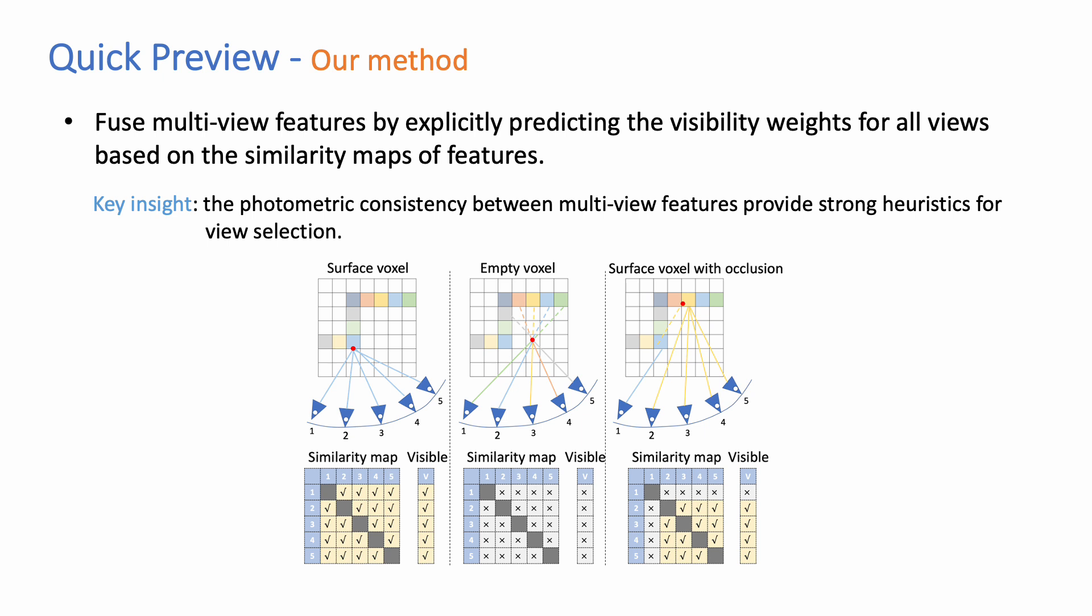For feature fusion, we predict the visibility weights for all views based on the similarity maps of features. The key insight is that photometric consistency between multi-view features provides strong heuristics for view selection.